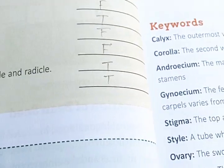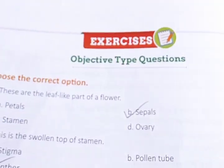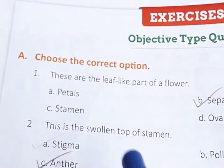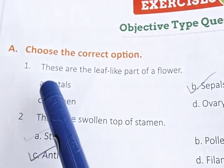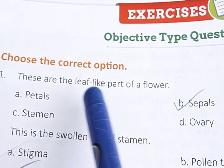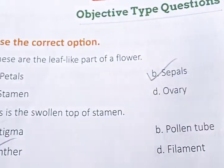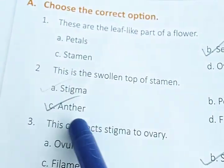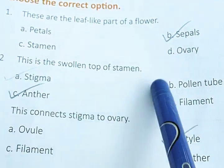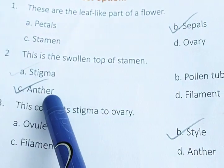Let's start the exercise now — objective type questions. I will discuss answers only. These are the leaf-like parts of a flower — these are sepals. This is the swollen top of the stamen — the knob-like structure on top of the stamen which contains pollen grains — that is known as the anther.